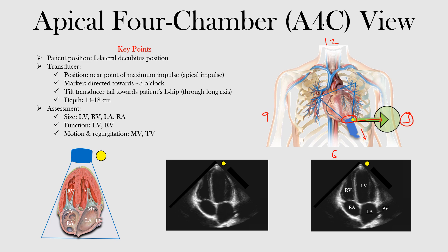We want to tilt the transducer towards the patient's left hip. Remember, if this is the right side of the patient, this is the left side — here's the arrow going towards the patient's left hip. We're going to direct the ultrasound beam through the long axis of the heart. The depth can be about 14 to 18 centimeters, and we can adjust it based on the patient.